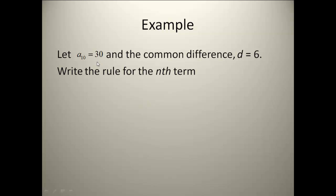Here's the first example. It says let a sub 10 equal 30 and let the common difference be 6. Write a rule for the nth term. I'm going to use the slope intercept form where we have y equals mx plus b. Now a sub 10 is telling me that n equals 10 and a sub n equals 30, so this is like my x and this is like my y. I know my d, which is my slope, is equal to 6. So I need to figure out what b is so I can write my rule.